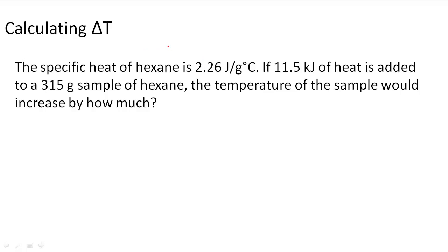Calculating delta T or change in temperature. In this problem, the specific heat of hexane is 2.26 joules per gram times degree Celsius. If 11.5 kilojoules of heat is added to a 315 gram sample of hexane, the temperature of the sample would increase by how much?